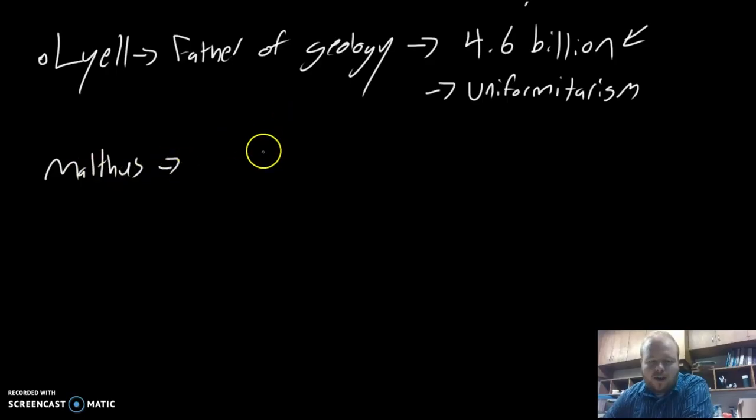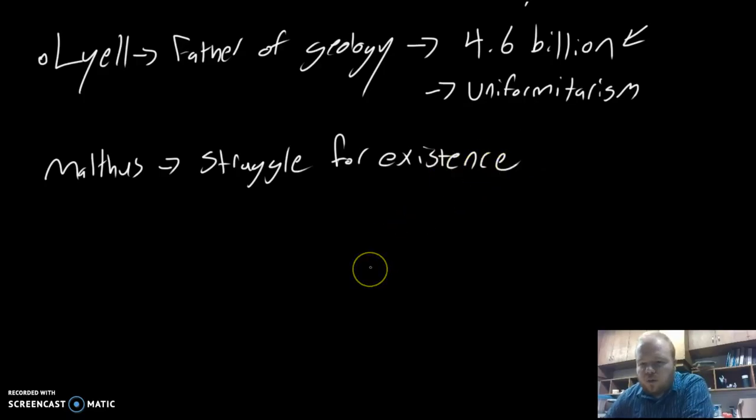Another influence on Darwin is a man by the name of Malthus. Malthus was a sociologist and mathematician. His big idea was the struggle for existence: basically, organisms are going to get to a point where they compete for food, and this struggle for existence shapes populations.